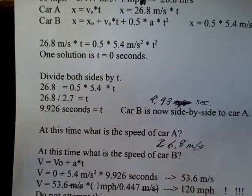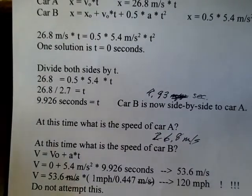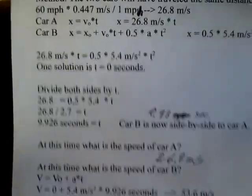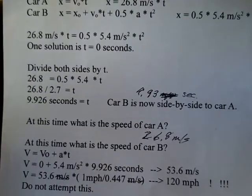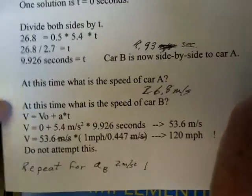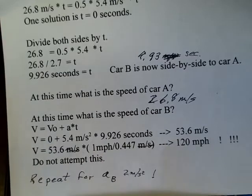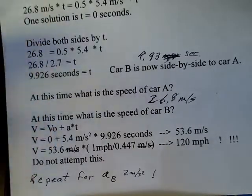And I'd like you to pause the video and repeat this calculation for the case when the acceleration is 2 meters per second squared. So repeat this calculation if we're just accelerating car B at 2 meters per second squared. Just repeat all the work that's on the sheet here. Pause and back up the video. And do your calculation on your own paper at 2 meters per second squared.